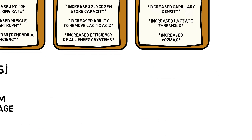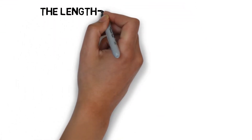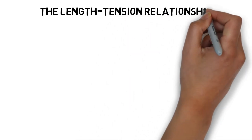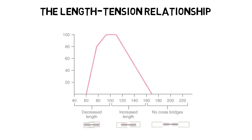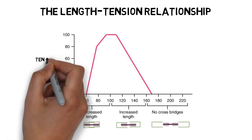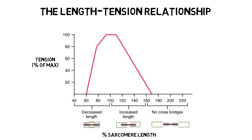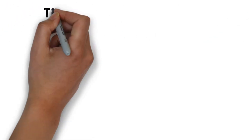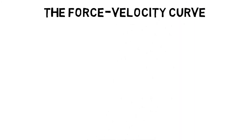It is also important to understand the following concepts in order to maximise the fundamental training principles. The length-tension relationship is the resting length of a muscle and the tension the muscle can produce at this resting length. There is an optimal muscle length at which actin and myosin filaments in the sarcomere have the greatest overlap, meaning the myosin can make the maximum amount of connections with actin, resulting in the potential to produce maximum force. Lengthening or shortening a muscle beyond this point will reduce the amount of connection between the actin and myosin and therefore reduce its force output.